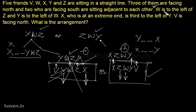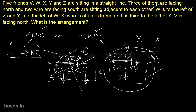Let us verify: W is to the left of Z because Z faces downwards. Y is to the left of W because W faces downwards. X is third to the left of Y — Y faces upwards, and two persons are between Y and X. V is facing north. This is the final verified arrangement. This is how you tackle such questions. We will take more questions of this type, and I will continue to follow this pass method in the coming lectures.